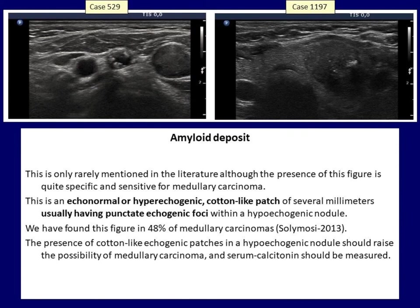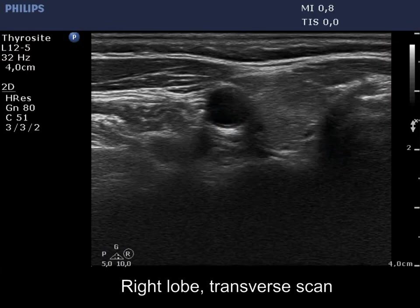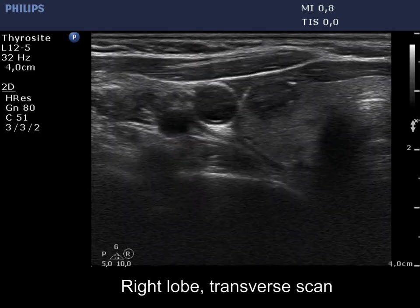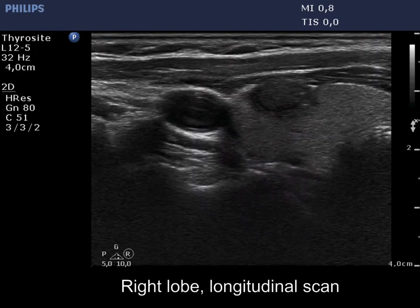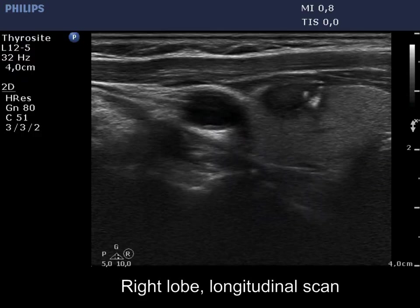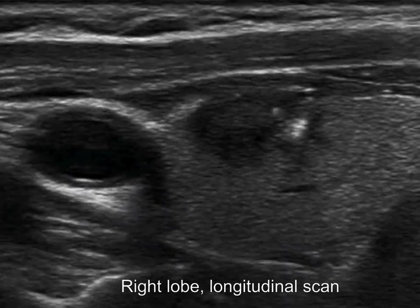Finally, two complex echogenic structures only rarely mentioned in the literature. The first is the amyloid deposit, which has a quite characteristic presentation with relatively good sensitivity and specificity for the diagnosis of medullary cancer. If we do not regularly measure serum calcitonin, identification of a cotton-like echonormal patch having punctate echogenic granules in a hypoechoic nodule has practical relevance, as it raises the possibility of medullary cancer. In the video, a hypoechoic nodule in the lower third of the right lobe has punctate echogenic foci and larger complex hyperechoic structures resembling torn cotton wool — these correspond to amyloid deposit.